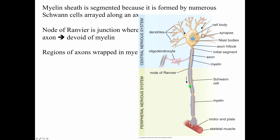Here's a node of Ranvier, then the myelin sheath, then another node of Ranvier — so between them is an internodal segment. A node of Ranvier is a bare region of the axon with no myelin, just like the initial segment of the axon has no myelin. This is very important for the generation and conduction of action potentials down the axon.